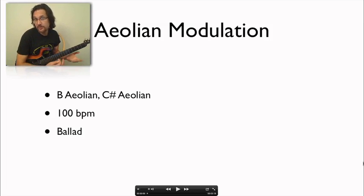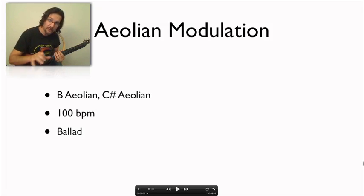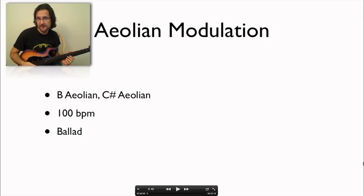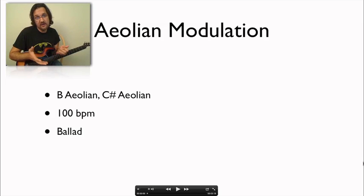A map track is a visual backing track. When you open the map track, you're going to have several pieces of information: the keys involved — in this case B Aeolian, C Sharp Aeolian — the tempo, which is very useful if you want to download the backing track and import it into your sequencer so that all the measures line up to the tempo you specified, and the style of music involved. Let's work with this particular map track and I'll pause it every once in a while to show you the different elements and how to use it.